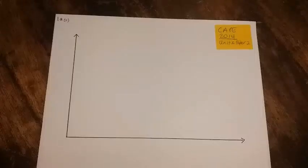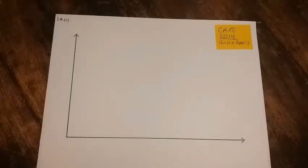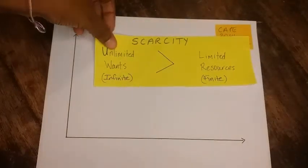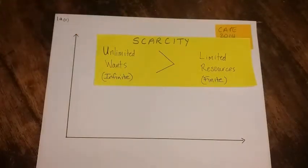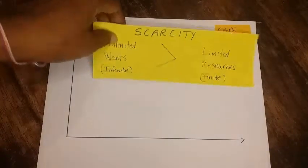Question 1 reads: the ideological nation of Utopia devotes all its resources — land, labor, capital and entrepreneurship — to producing food and clothing. Part 1 asks us to define the term scarcity for two marks. Scarcity is when we have unlimited or infinite wants being greater than our limited resources, which are finite. Once you have those two components you should get your two marks.